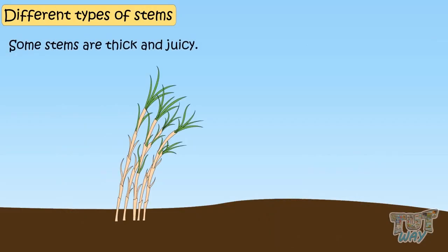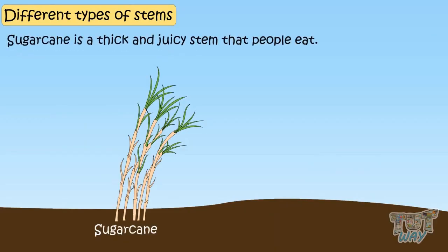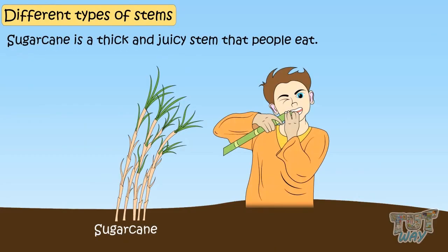Some stems are thick and juicy. For example, sugar cane. Sugar cane is a thick and juicy stem that people eat.